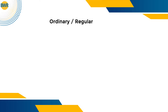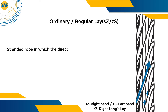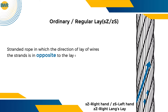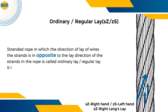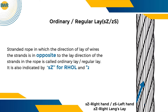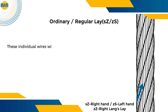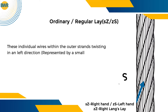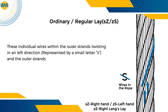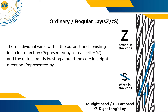Ordinary Regular Lay: Stranded rope in which the direction of lay of wires in the strands is opposite to the lay direction of the strands in the rope is called Ordinary Lay or Regular Lay. It is also indicated by SZ for RHOL and ZS for LHOL. The individual wires within the outer strands twist in a left direction, represented by a small letter S, and the outer strands twist around the core in a right direction, represented by a capital letter Z.